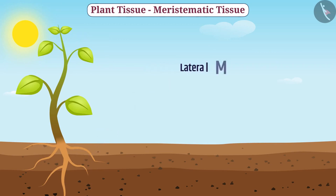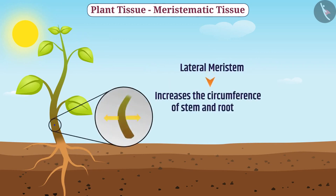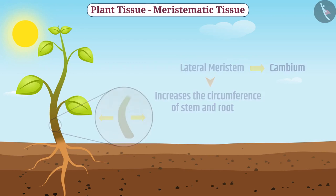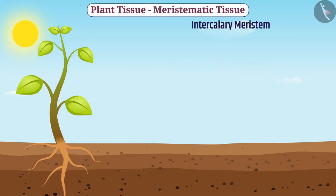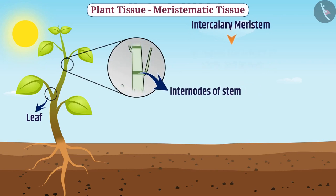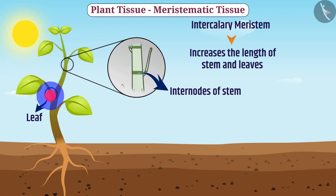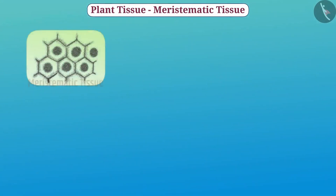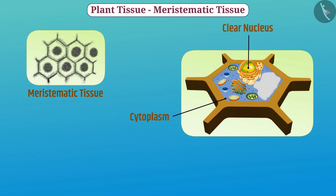Similarly, lateral meristem increases the circumference of the stem and root, and lateral meristem is also called cambium. The intercalary meristem is present in the leaf base and near the internodes of the stem, which increases the length of stem and leaves. The cells of meristematic tissue divide, that's why they are highly active. They have dense cytoplasm, a clear nucleus, and thin cell walls. Cells of meristematic tissue do not need to store nutrients, that's why they do not have vacuoles.